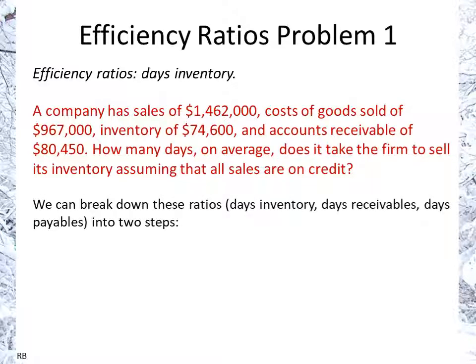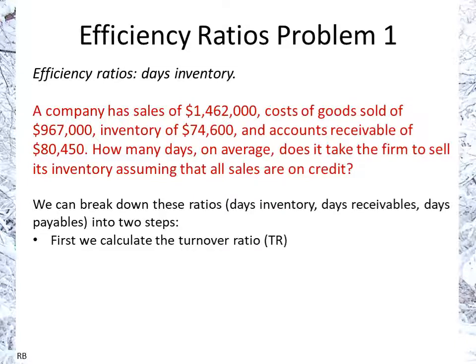These ratios — days inventory, days receivable, days payable — can be broken into two steps. Step one is we calculate the turnover ratio: how many times are they turned over in a year. Then to calculate the days, we take 365 divided by the turnover ratio, and that gives us the number of days. Some texts will say 360 divided by turnover ratio — it's not a big deal. I use the real number, 365.